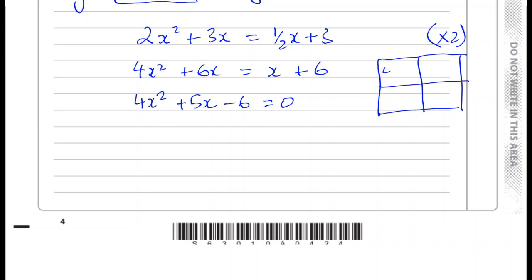So I'm going to put 4x squared here and I'm going to put minus 6 here. I need to find two numbers when I multiply them I get minus 24x squared. And when I add them, I get plus 5x. So they have to have different signs. So I think of all the ways of getting 24. I have 24 and 1, and 12 and 2, and I have 6 and 4.